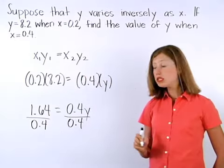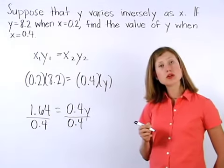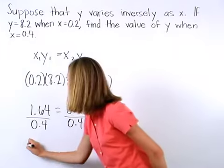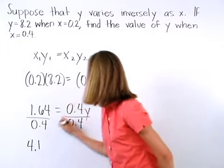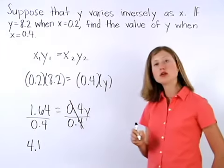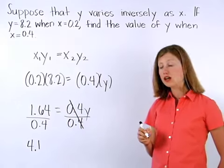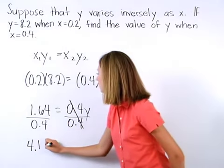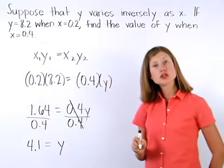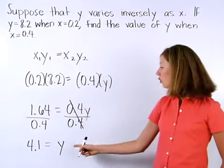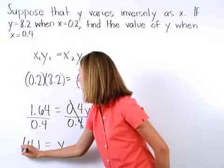1.64 divided by 0.4 is equal to 4.1. 0.4 and 0.4 cancel each other out. So 4.1 is equal to y. When x is equal to 0.4, y is equal to 4.1.